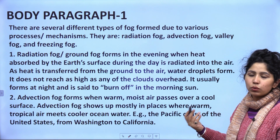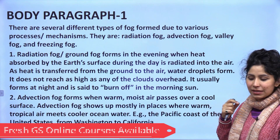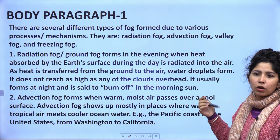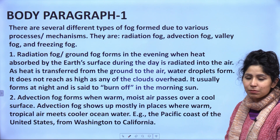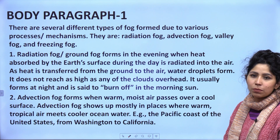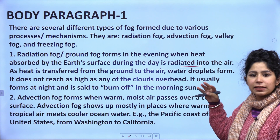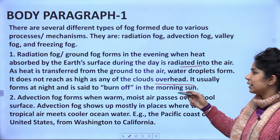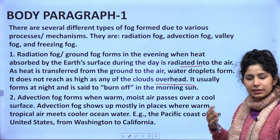Now we will give just one to two lines for all types of fogs. Include that there are several different types of fogs formed due to various processes or mechanisms. Our aim is to elucidate the mechanisms behind formation of different types of fogs. The first one is radiation fog or ground fog, which forms in the evening when heat absorbed by the earth's surface during the day is radiated into the air. This does not rise very high in the sky. Water droplets form but it does not reach as high as any of the clouds overhead. It usually forms at night and is said to burn off in the morning sun — as soon as you see sunrise it is said to burn off.